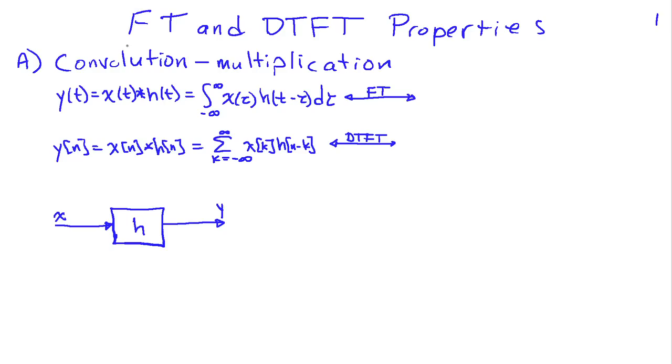So the first one I want to look at is the so-called convolution multiplication property. And this property has physical meaning because we know that if we have a linear time invariant system, the output is related to the input via a convolution of the input with the impulse response. So if we write y(t) = x(t) * h(t), which can be expressed in terms of the convolution integral, it turns out the Fourier Transform is particularly simple. What we see is that the Fourier Transform of the output, Y(ω), is equal to the product of the Fourier Transform of the input X(ω) times the Fourier Transform of the impulse response, which we're also calling the frequency response of the system.